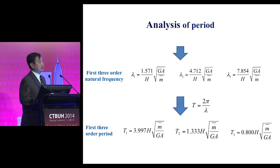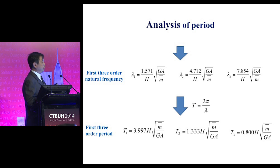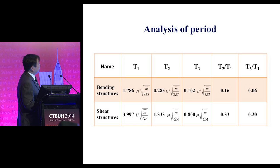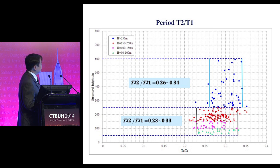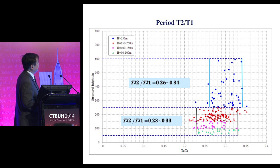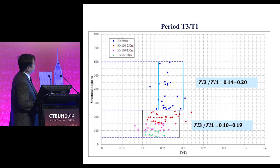Our actual structures combine pure bending and shear, so we have a combined solution. We can derive the relationships between T2/T1 and T3/T1. For T2, the analytical range is 0.16 to 0.33. From the real data, T2/T1 is about 0.26 to 0.34, followed by the third-order period.